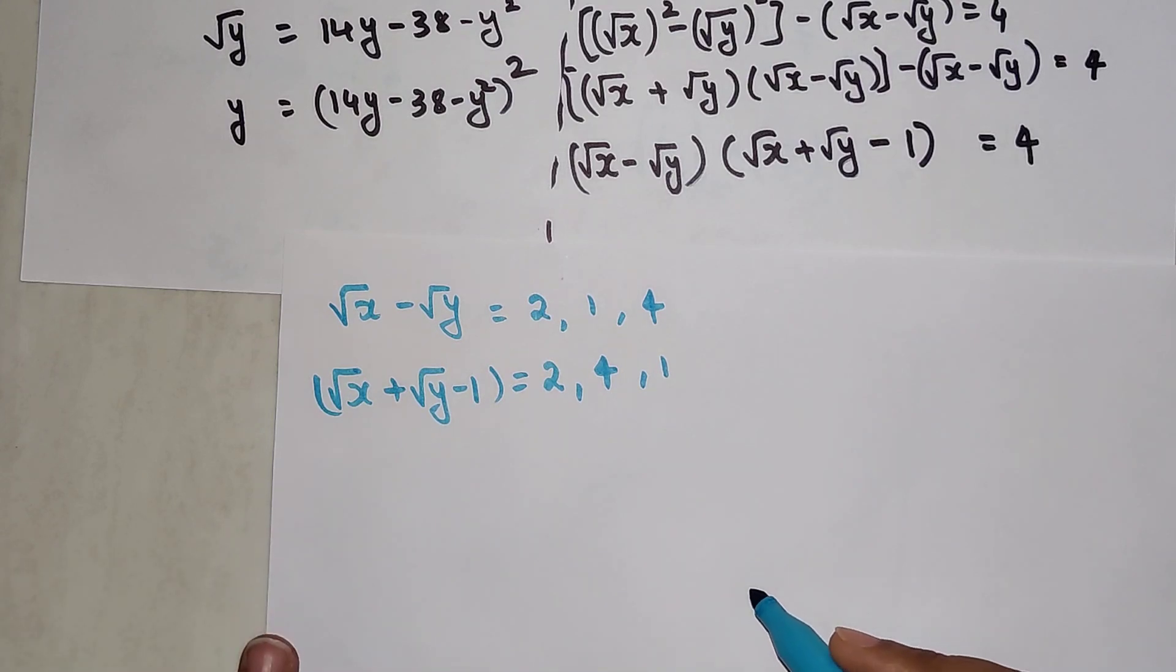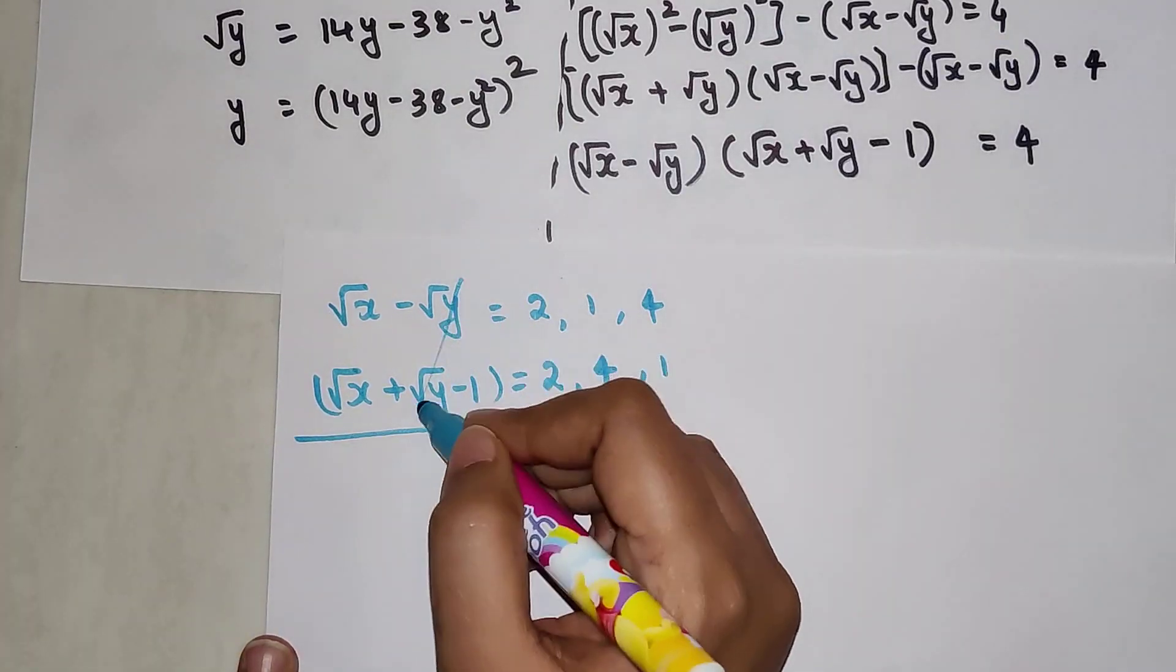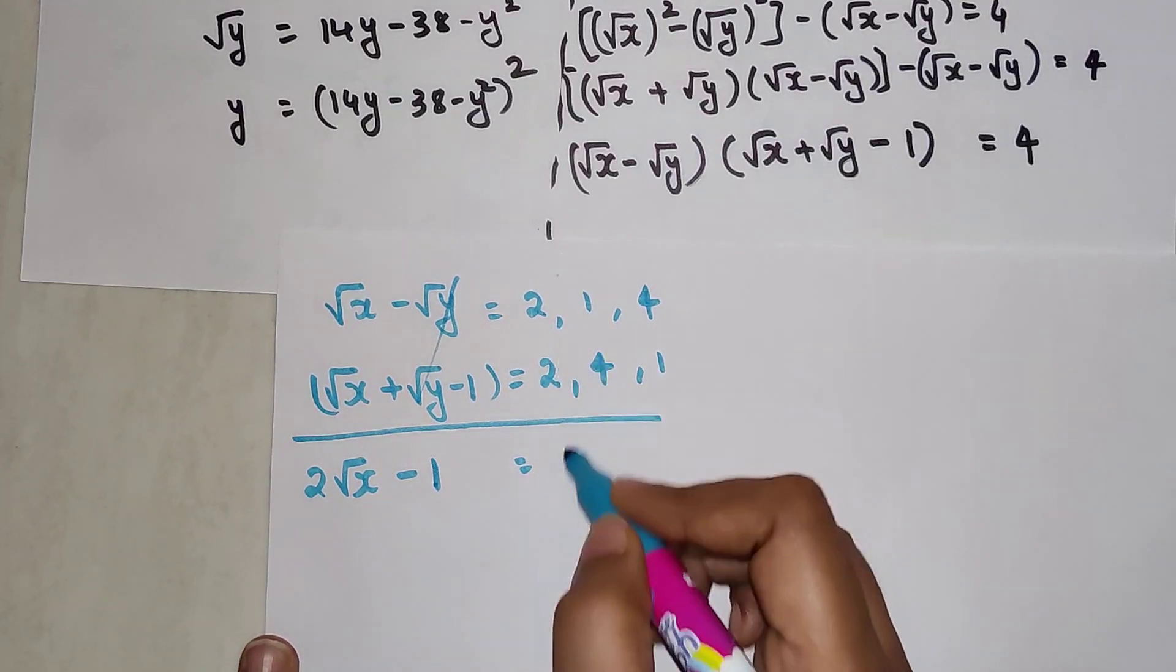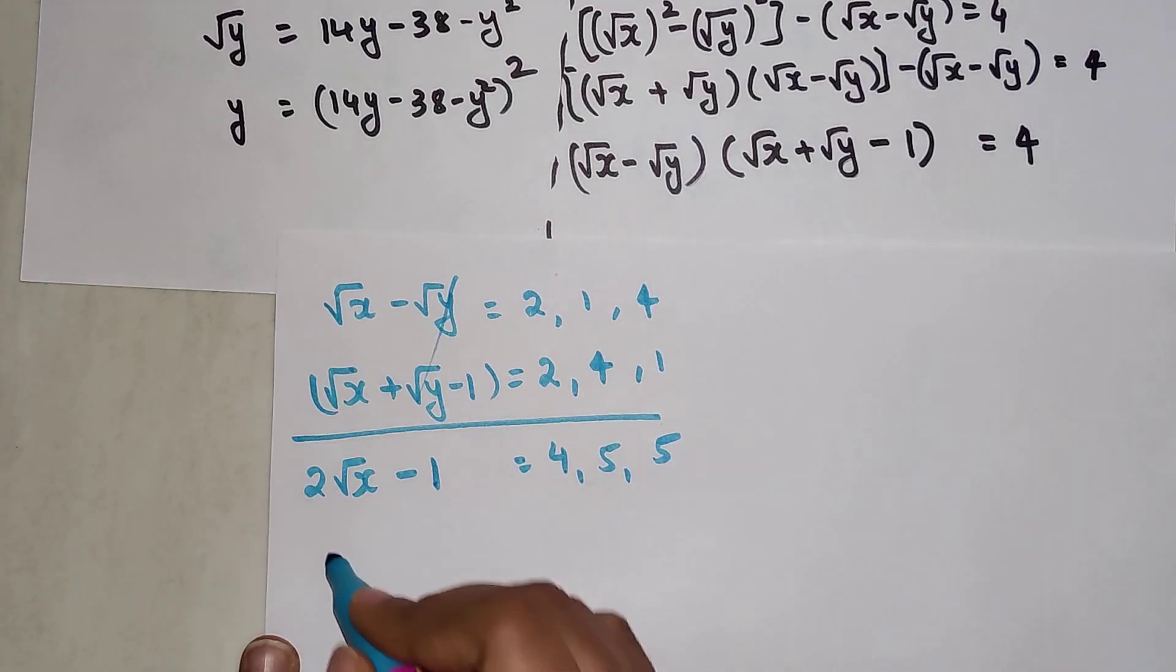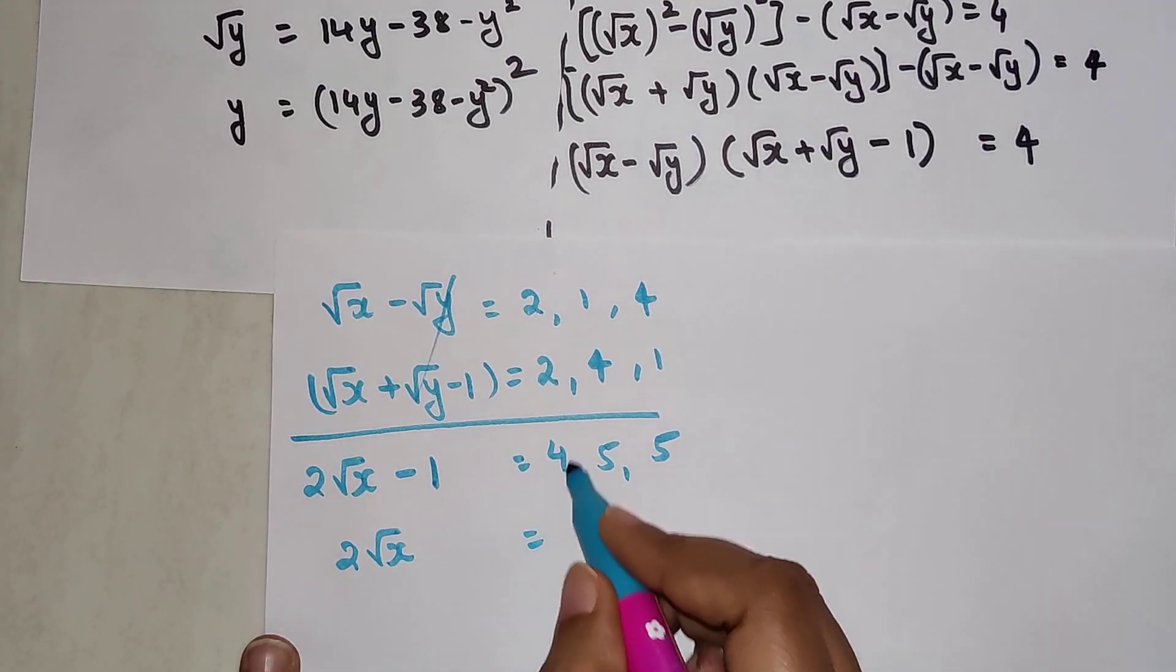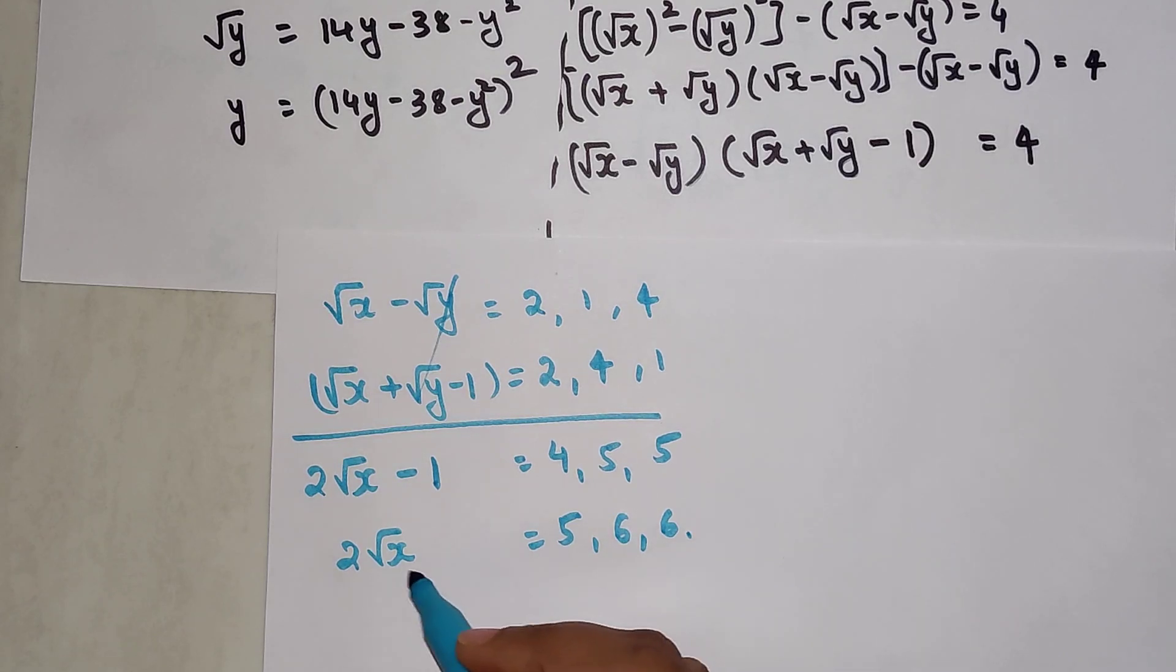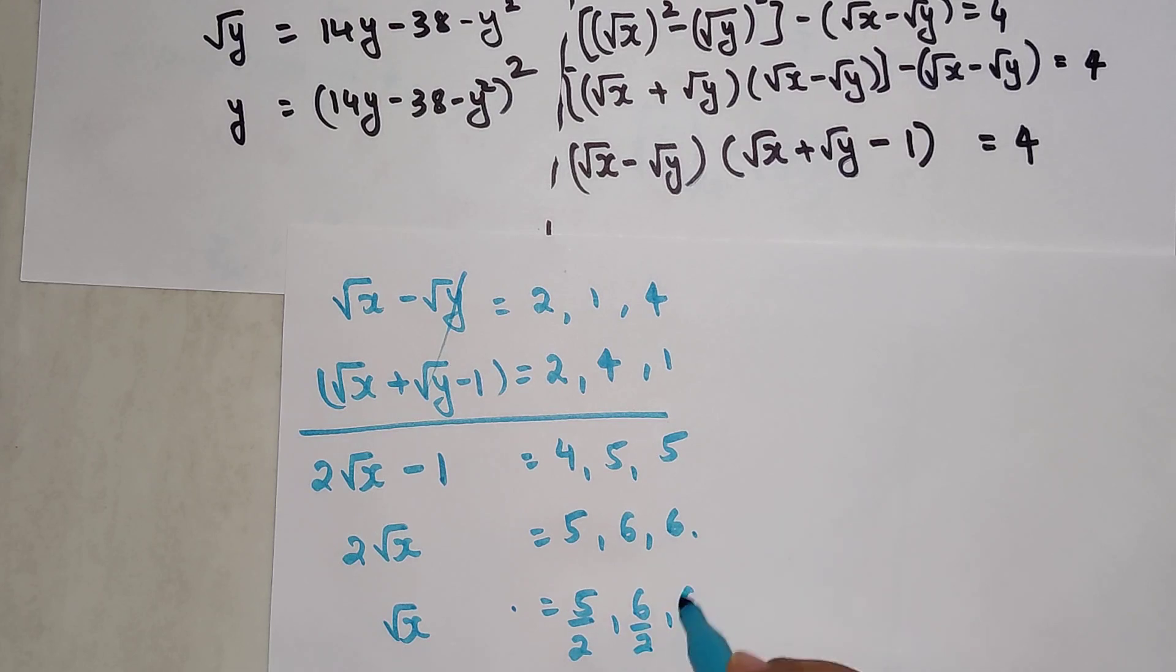Let's try and add all of them. When you add them, your y's will get cancelled. I will get 2 root x minus 1 equals 4 plus 5 plus 5. 2 root x equals 5 plus 6 plus 6. To find the value of root x, we need to divide all of these by 2.